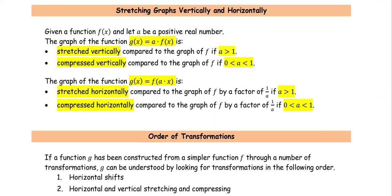Next: stretching graphs vertically and horizontally. Given the function f(x), let a be a positive real number. The graph of g(x) = a·f(x) is stretched vertically compared to the graph of f if a is greater than 1. The graph of g(x) = f(a·x) is stretched horizontally compared to the graph of f by a factor of 1/a. If a is greater than 1, the graph is compressed horizontally by a factor of 1/a. If a is between 0 and 1, the graph is stretched horizontally.